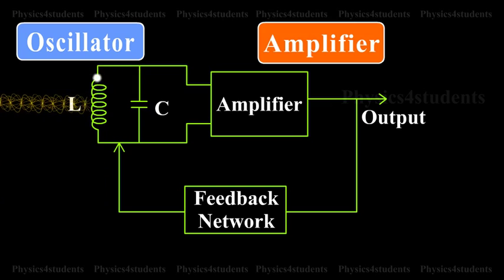Amplifier. The transistor amplifier receives DC power from the battery and changes into AC power for supplying to the tank circuit.